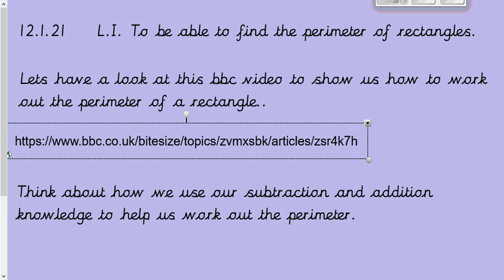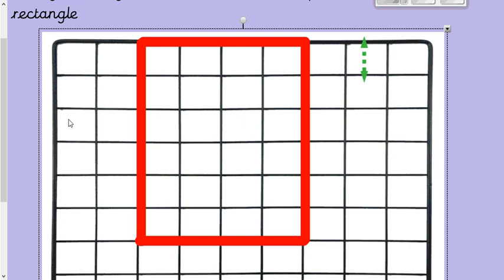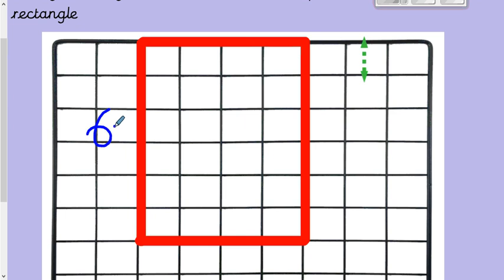Hopefully that video went through it in a bit more detail and you were able to see how we actually work out the perimeter using our addition knowledge. So I'm going to show you a rectangle and we're going to work out the perimeter together. This grid, we're going to pretend that each square is a centimeter wide. It's not actually, but for the sake of this we're just going to do it. So let's count how many squares down it would be. 1, 2, 3, 4, 5, 6. So we know that it's 6 centimeters this side.